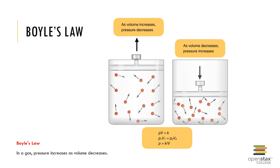Boyle's Law is an important factor in pulmonary ventilation. Boyle's Law refers to volume and states that volume is inversely proportional to pressure — that is, as volume increases, pressure decreases, and as volume decreases, pressure increases. If you reduce the volume of the thoracic cavity by half, the pressure within will double. If you double the volume of the thoracic cavity, the pressure within will decline by half.